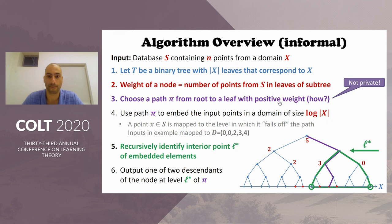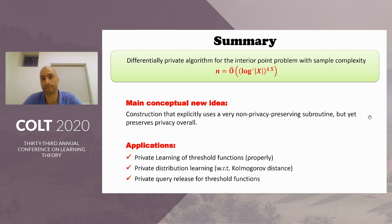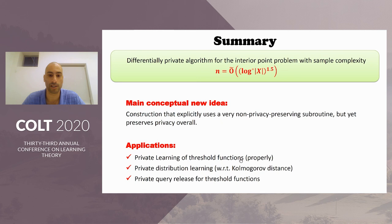To summarize: we give a new algorithm for the private interior point problem with sample complexity roughly (log* |X|)^1.5. The main new conceptual idea is that we identify the path pi in a way that does not satisfy differential privacy by itself, but we show the whole algorithm does satisfy differential privacy. This problem has several applications including learning threshold functions, private distribution learning, and others. Thank you.